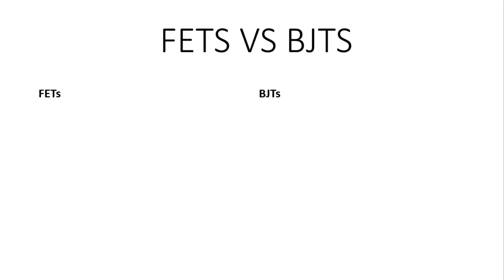Let us first compare the FETs with the BJTs. The FET is a unipolar device, which means that single charge carriers are responsible for conduction — whether they are holes or electrons. Only the single charge carriers, the majority charge carriers, are responsible for conduction in the FETs.